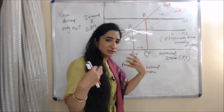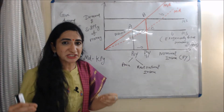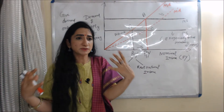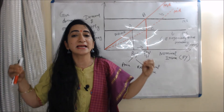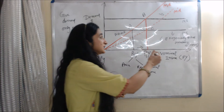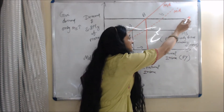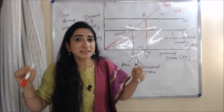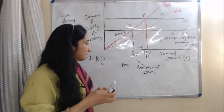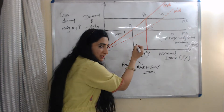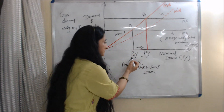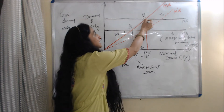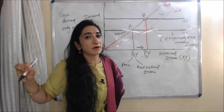We assume money supply is exogenously fixed by the monetary authority. Initially, we have equilibrium at point A, where money supply equals money demand. Now suppose, for any reason, at a given demand, money supply increases — the money supply curve moves forward from MS to M'S. This creates excess money supply over money demand, which increases the price of goods and services from P0 to P1, raising nominal income from P0Y to P1Y, until we reach a new equilibrium point at B.